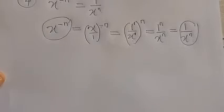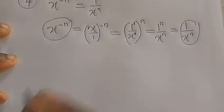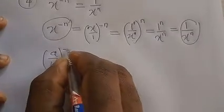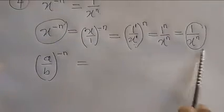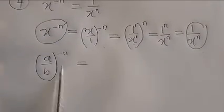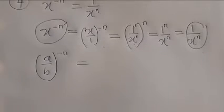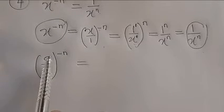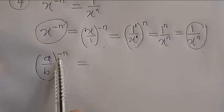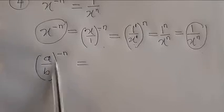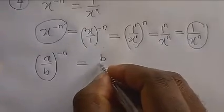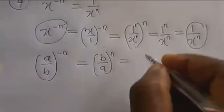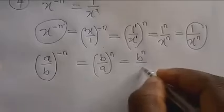Example: (a/b) raised to power minus n. The negative means reciprocal — turn it upside down — giving (b/a) raised to power n. This can be written as b raised to power n over a raised to power n. That is the answer.